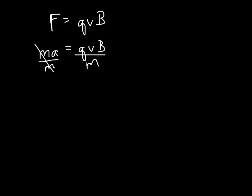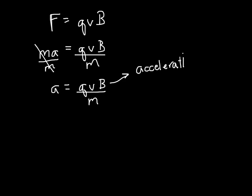I can solve for the acceleration that my particle is feeling by dividing both sides by m, and I find an acceleration equal to q times v times B divided by the mass of my particle. This is the acceleration due to motion in a magnetic field.